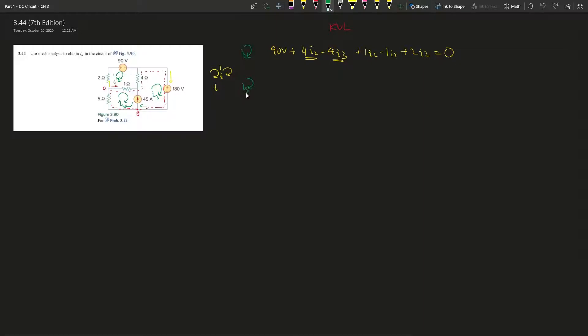And then this is I super. Oh sorry, let's simplify this real quick. So we have negative 1I1, 1, 2, so 7 plus 7I2 minus 4I3 and negative 90 volts.